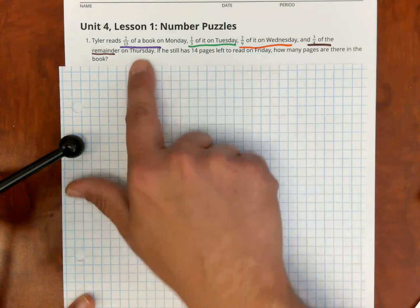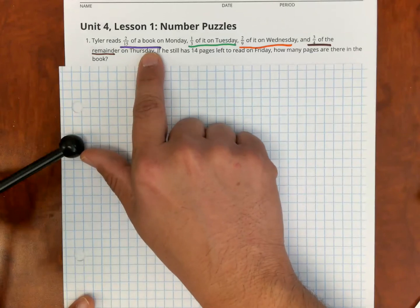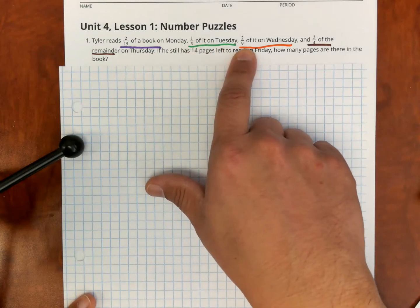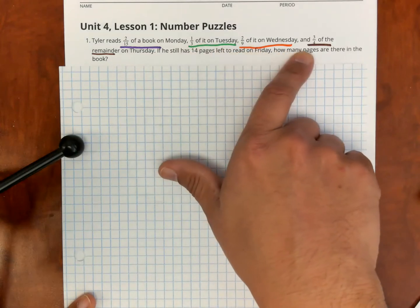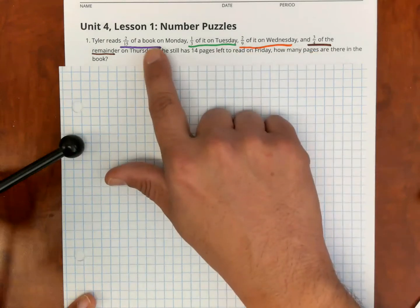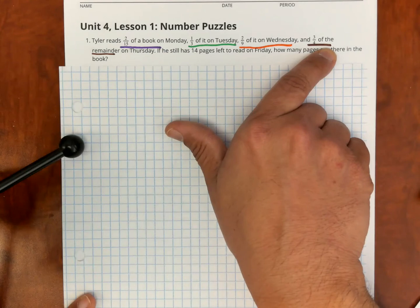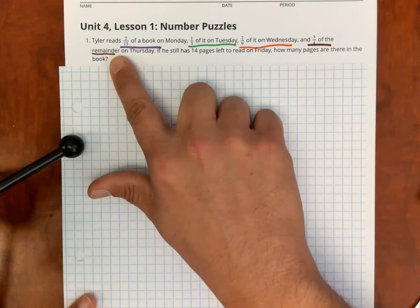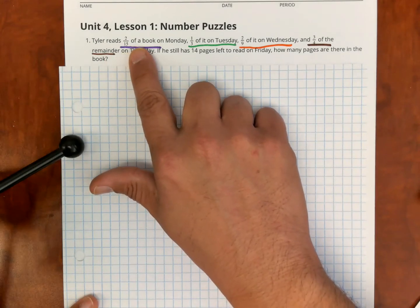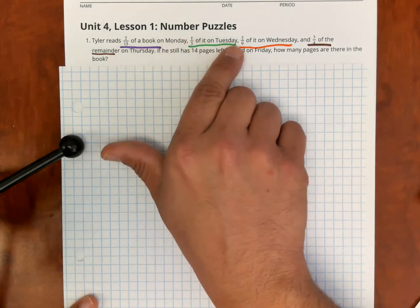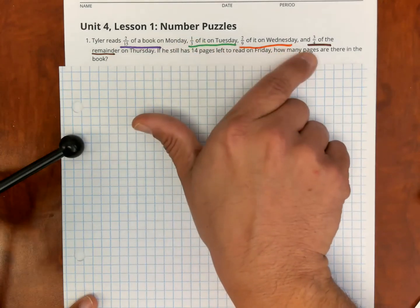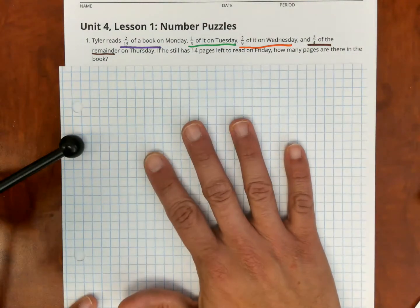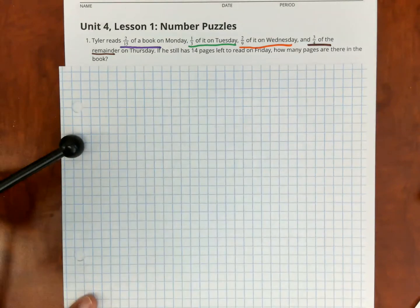I've already color-coded things here. Tyler reads two-fifths of a book on Monday — I'll do that in purple. He reads one-third of it on Tuesday — that's green. Two-ninths of it on Wednesday — that will be orange. And three-quarters of the remainder on Thursday — I colored that in brown. Notice it says 'of the remainder' — that's what makes this problem complicated. The first fractions are all of the book; the three-quarters is of what's left.